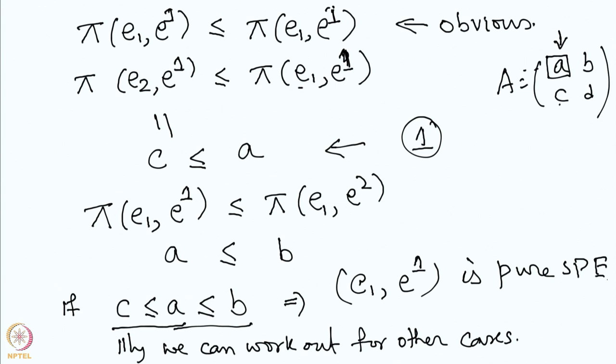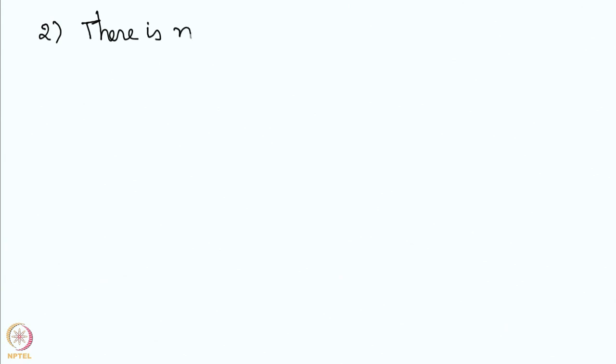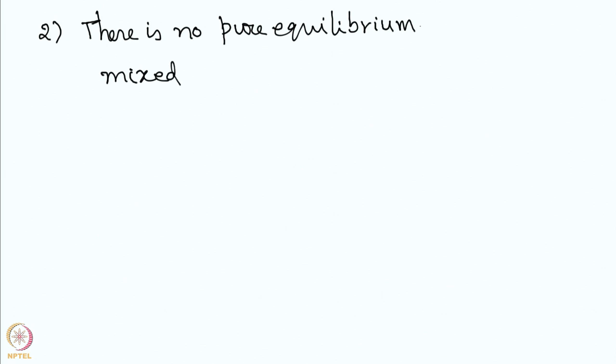Now let us look at the case where there is no pure equilibrium. In that case, how can we prove there exists a saddle point equilibrium? Existence is guaranteed by the von Neumann minimax theorem; we need to calculate the mixed equilibrium.